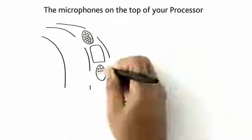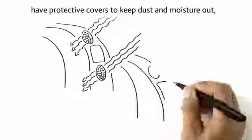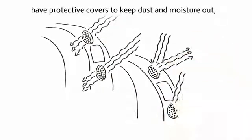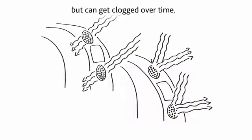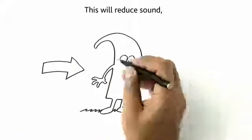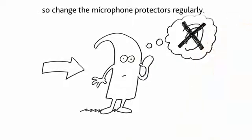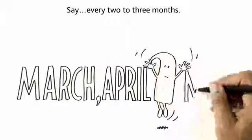The microphones on the top of your processor have protective covers to keep dust and moisture out, but can get clogged over time. This will reduce sound, so change the microphone protectors regularly, say every two to three months.